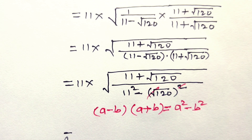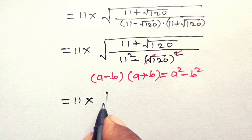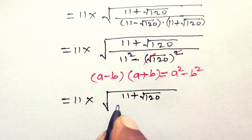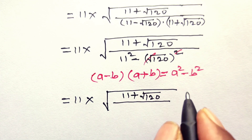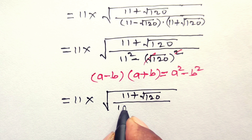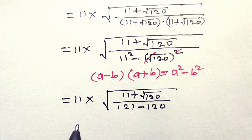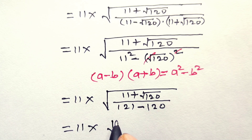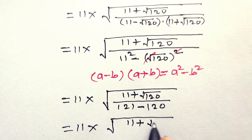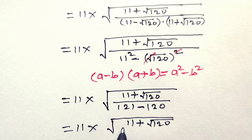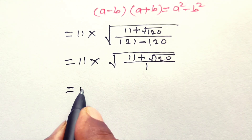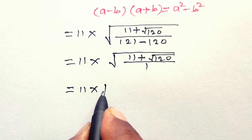Hence, this is equal to 11 into square root of (11 plus square root of 120), divided by 11 squared minus 120. That is 121 minus 120, which gives 1. So this is equal to 11 into square root of (11 plus square root of 120) divided by 1.